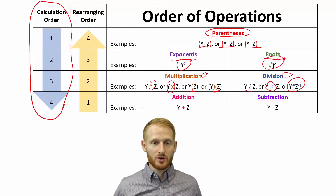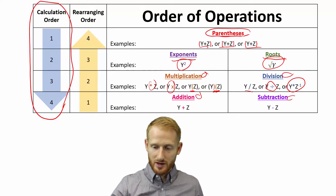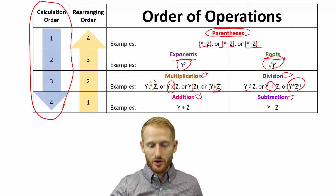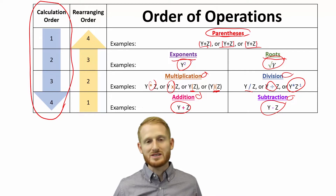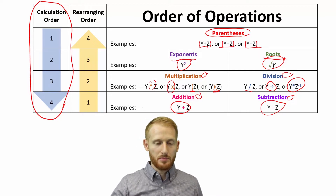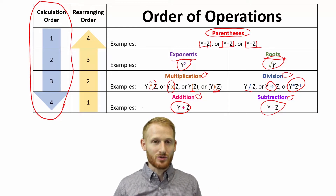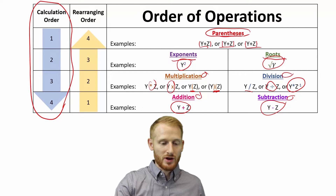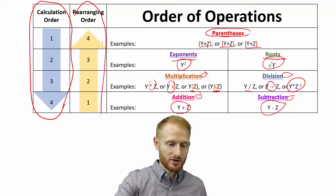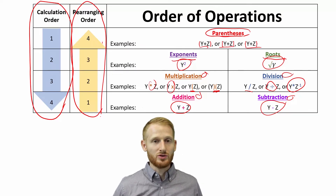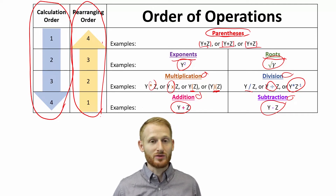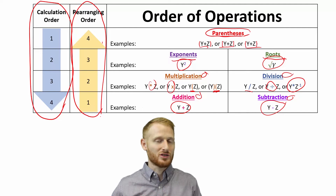The last things you do in your order of operations are your addition and your subtraction — the typical plus and minus signs. Whenever you're doing a calculation and you have to rearrange it in order to isolate something, you actually reverse the order of operations. The left column is what you do when you just need to solve the equation; the right column is when you have to rearrange it first.